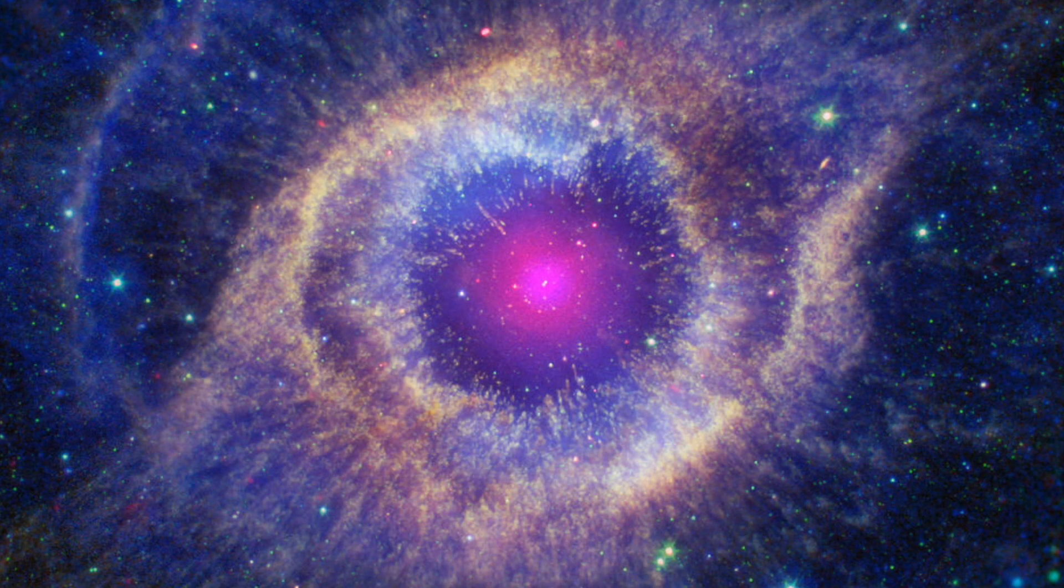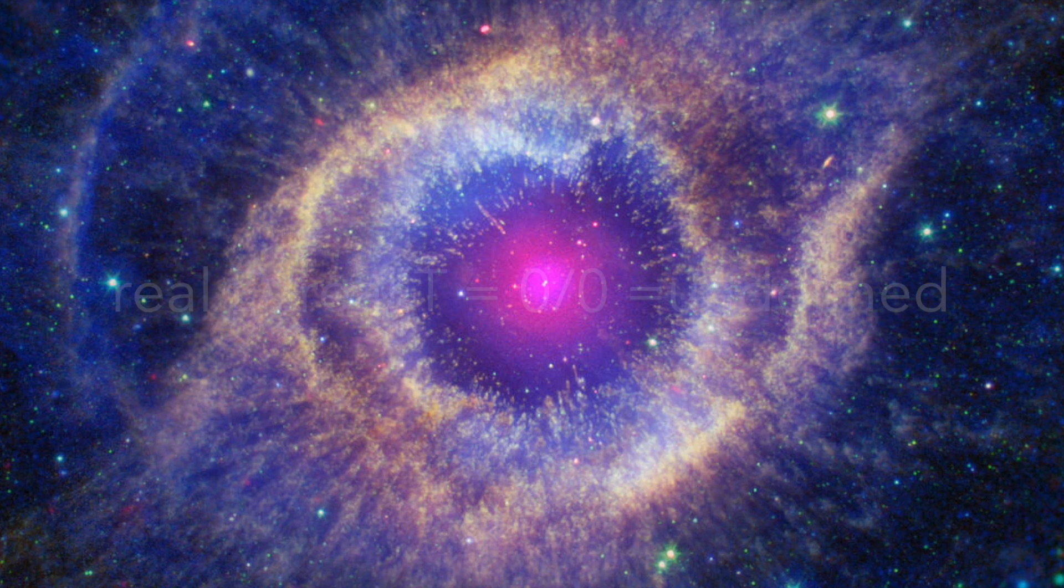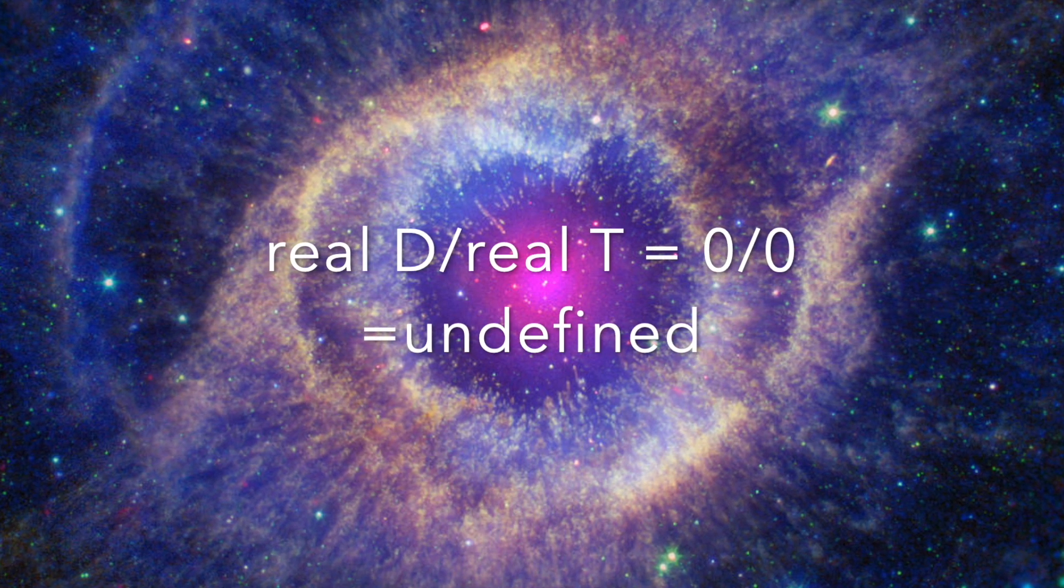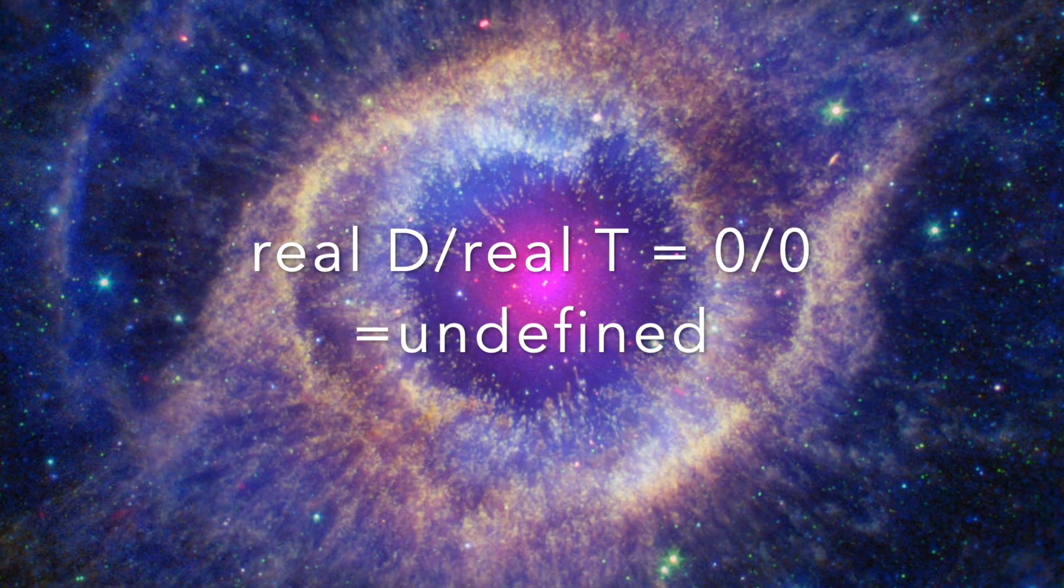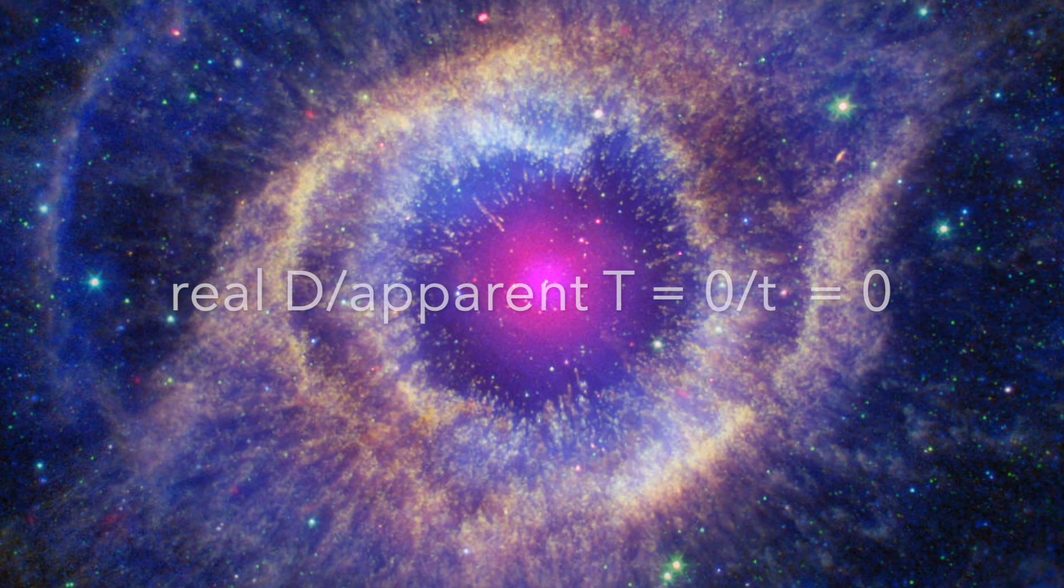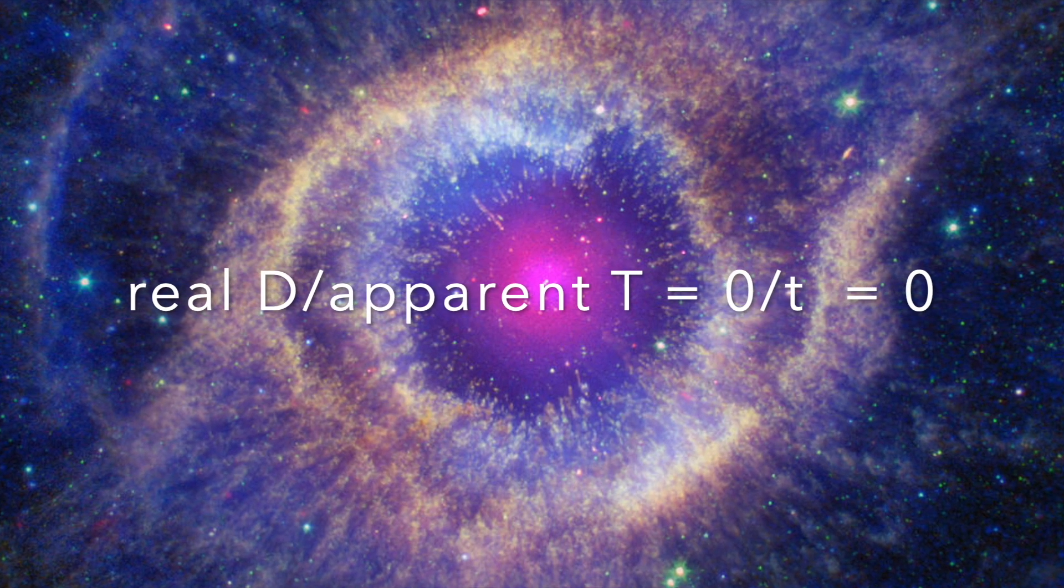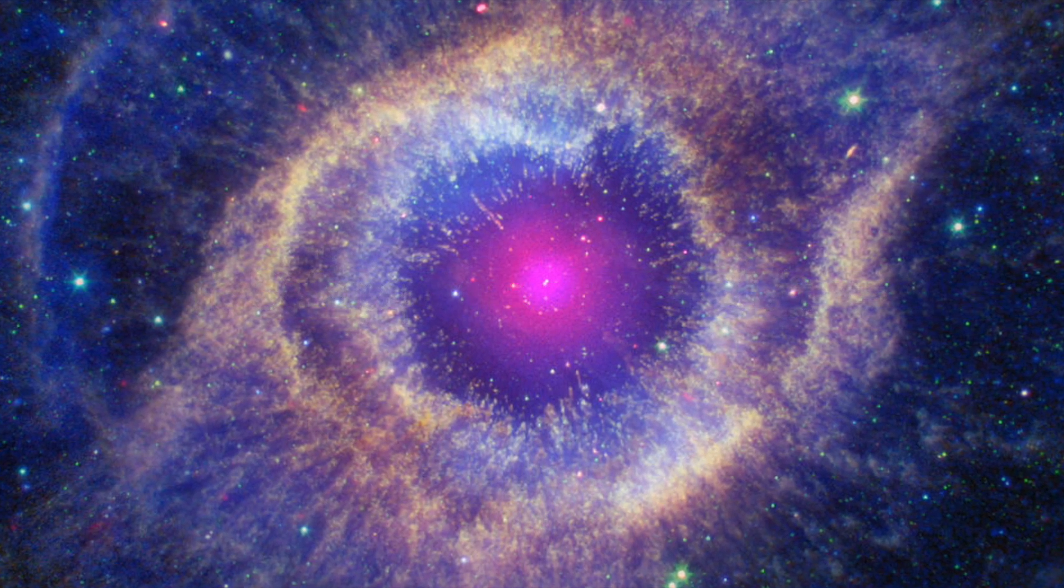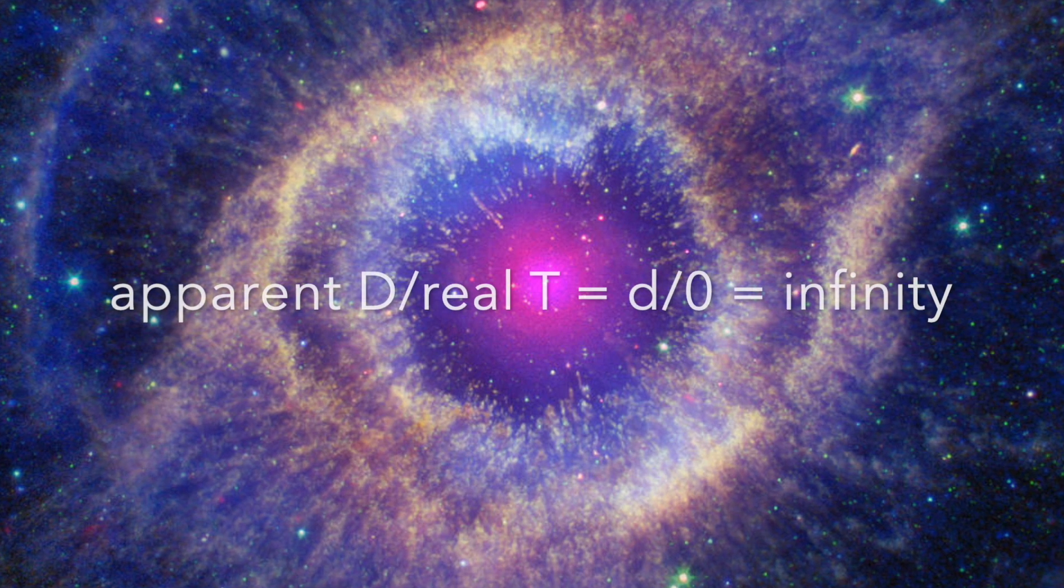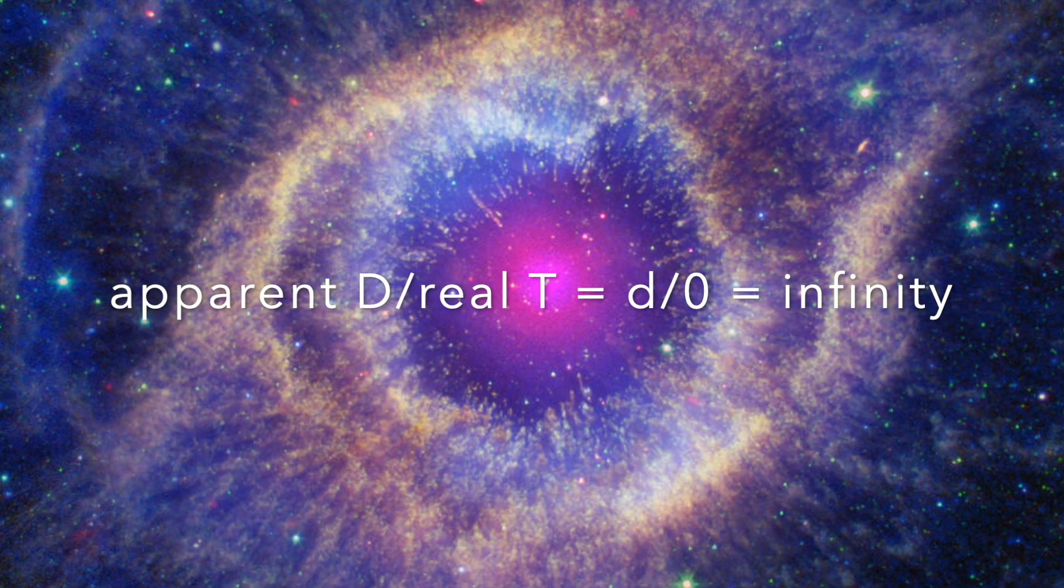Thus, the velocity of P can be calculated in four different ways. Real distance divided by real time: 0 divided by 0, this is undefined. Real distance divided by apparent time: 0 divided by small t, which equals 0. Apparent distance divided by real time: small d divided by 0, this is infinity.